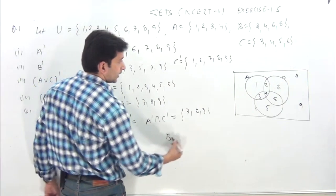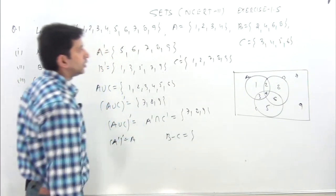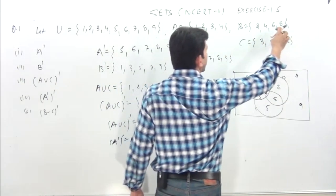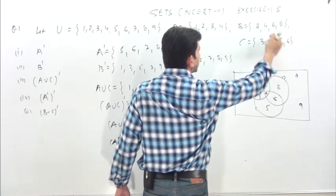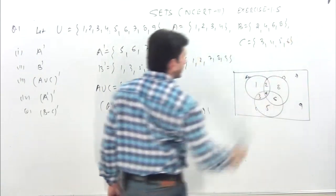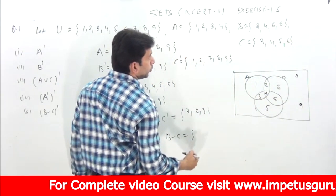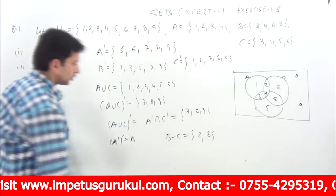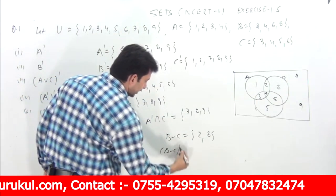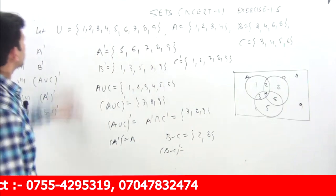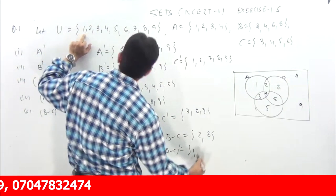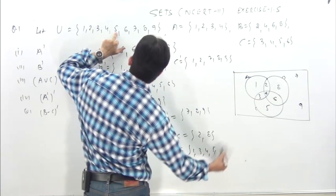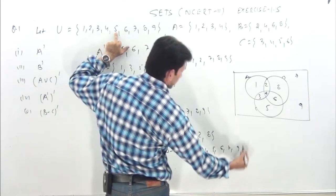B minus C: B minus C means remove common elements. B and C ka common — 4 cancel ho jayega. So B minus C = {2, 6, 8}. Now the complement is written. B minus C = {2, 8}, so the complement of B minus C = {1, 3, 4, 5, 6, 7, 9}.